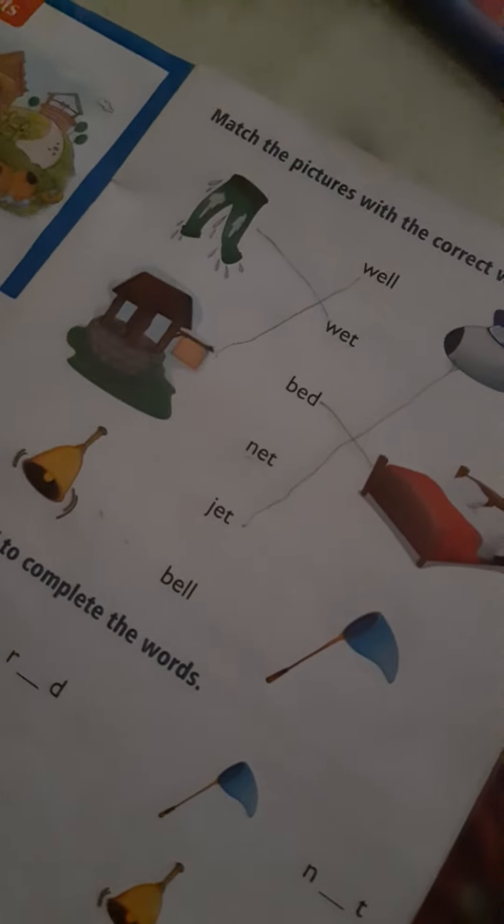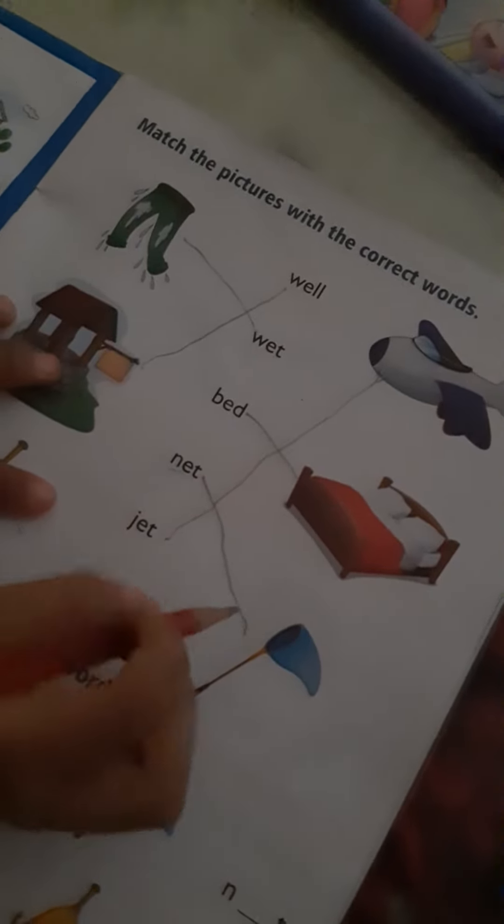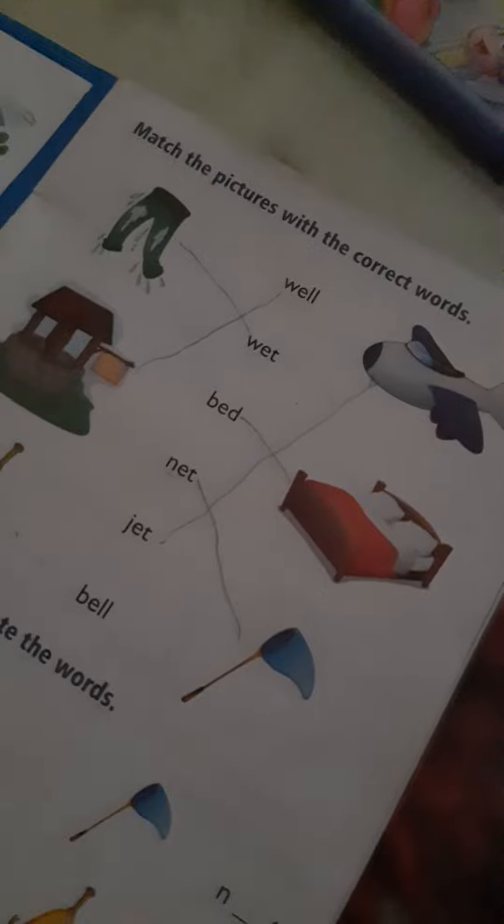Now what is this one? You didn't do this. You have left this. What is this? Tell me. This. Yes. Do you know what this word is? Yes. Say it. Pronounce it first. What is this word called? Net. Net. Good.